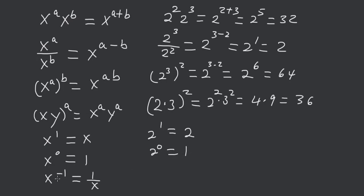You have x to the negative 1 is equal to 1 over x. So if you have 2 to the negative 1, this is equal to 1 over 2, one half.